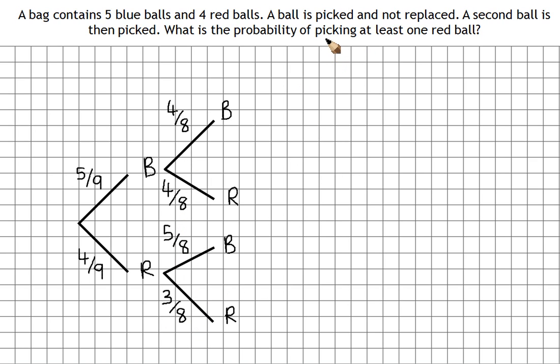To find the probability of picking at least one red ball, the idea is still the same though. So we've got this option, we've got this option, and we've got this option. So if we want the probability of blue and red, we multiply the probabilities. So we've got five ninths times four eighths this time. So that's going to be twenty over seventy-two.